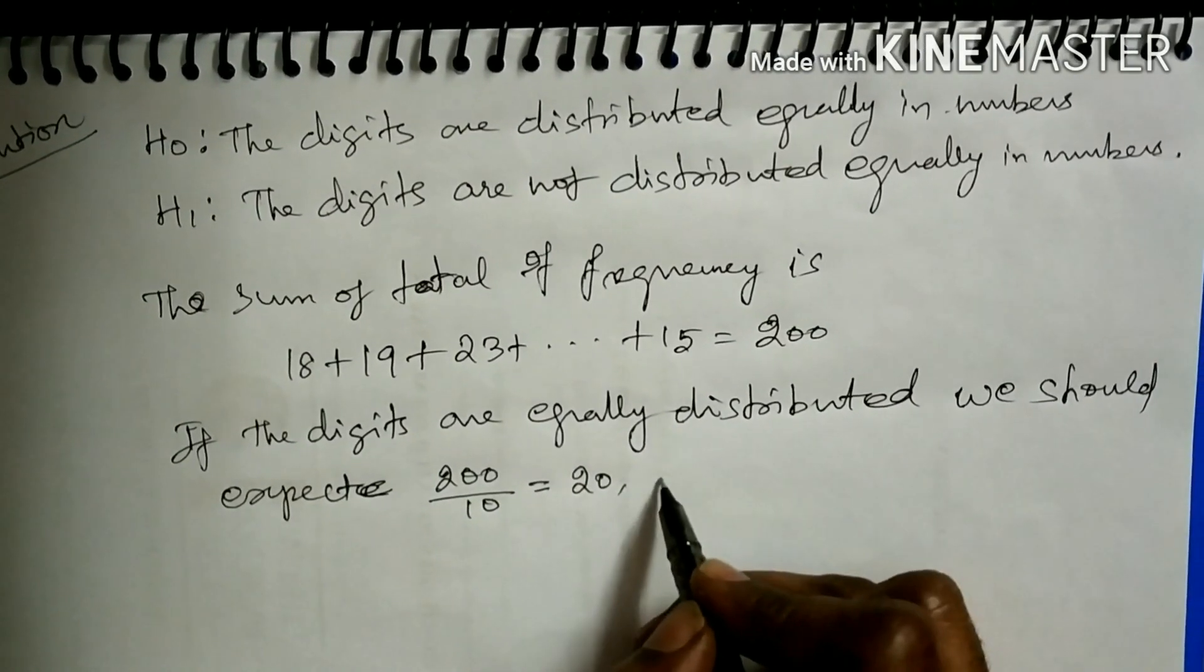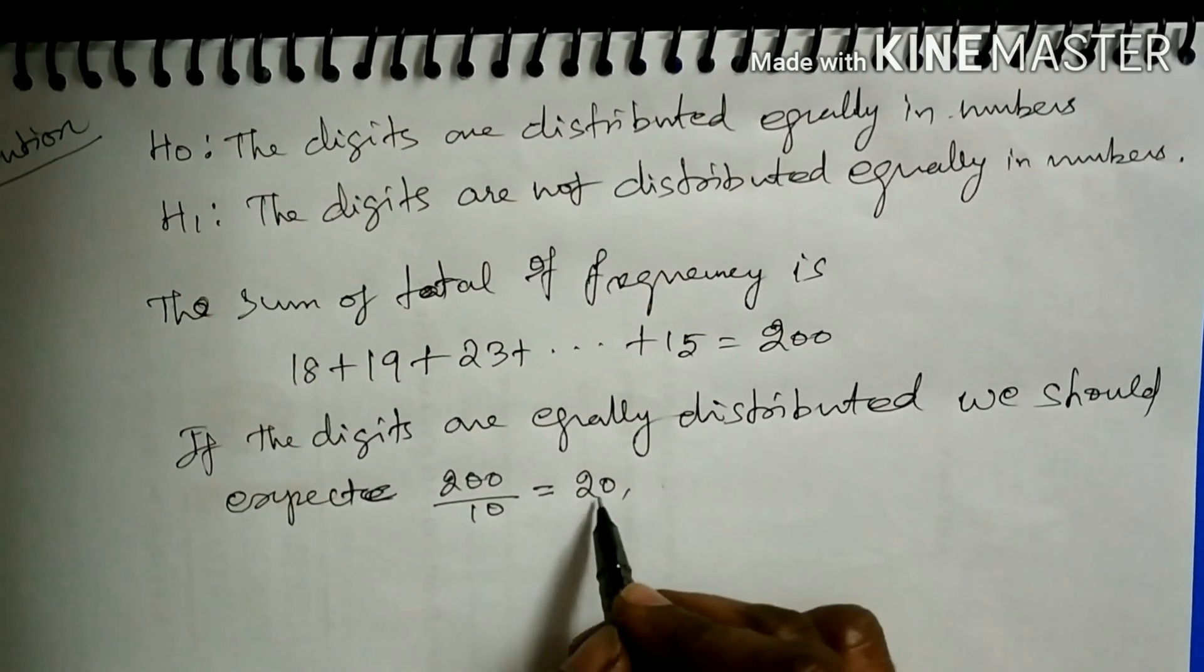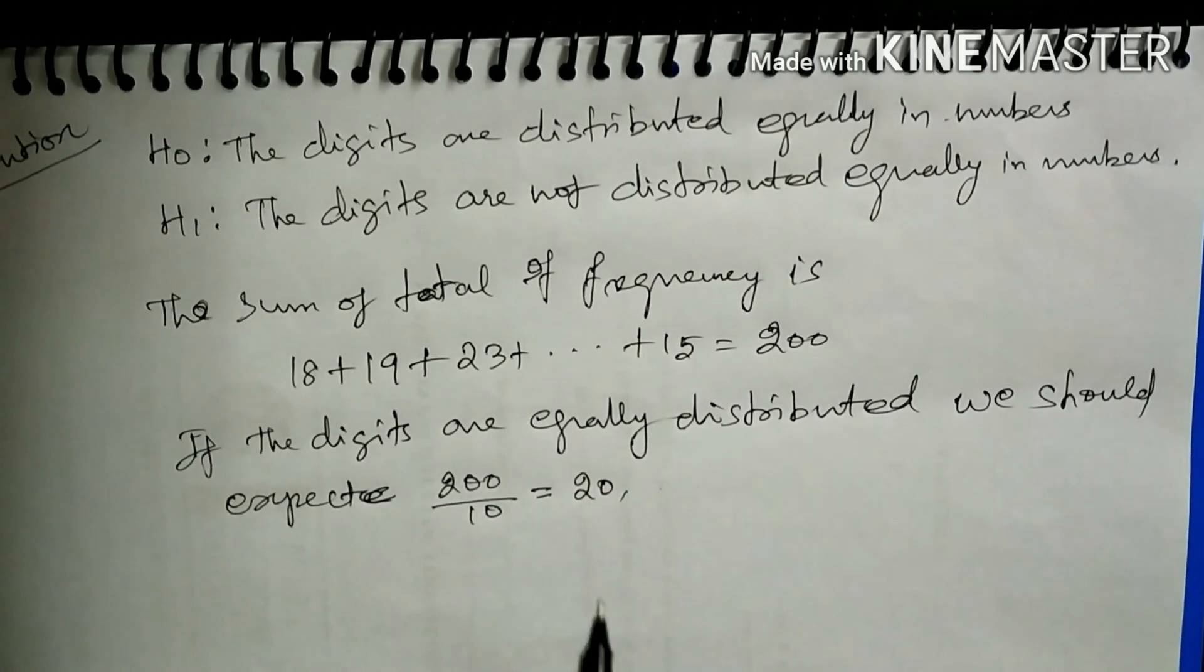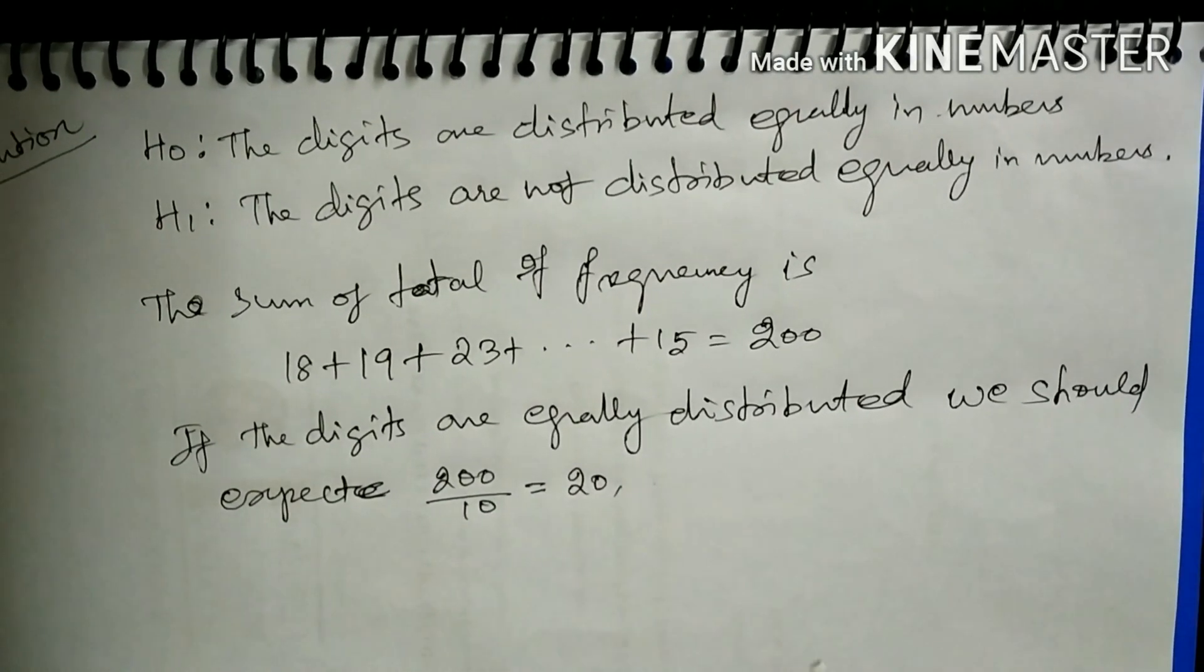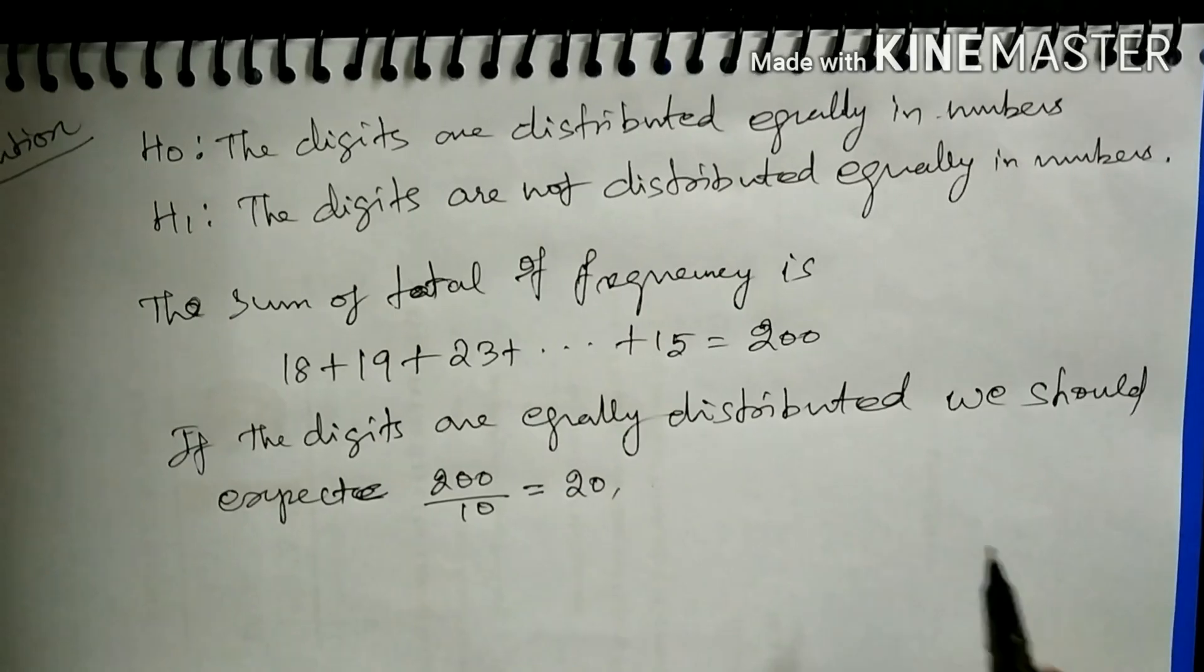That means 0 should appear 20 times, 1 should appear 20 times, 2 should appear 20 times. Finally, 9 should also appear 20 times.